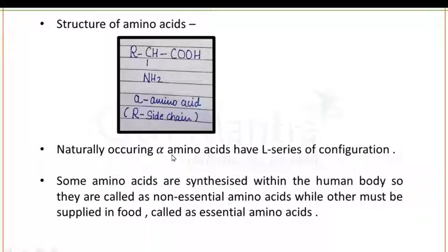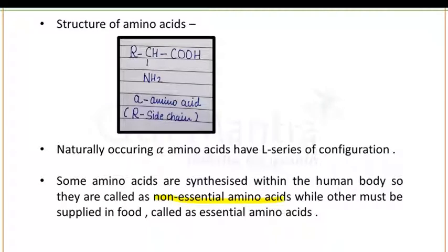Amino acids are divided into two major parts: non-essential amino acids and essential amino acids. The amino acids that are synthesized in our body are known as non-essential amino acids. Amino acids that are required by our body but must be supplied through our food or diet are known as essential amino acids.